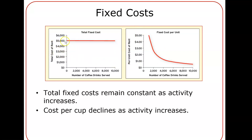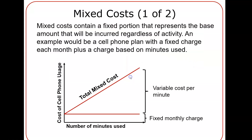Fixed costs are the exact opposite — they remain the same in total and they change per unit. The cost of rent remains $5,000 no matter how many drinks you serve within a relevant range. The per-unit cost of rent goes down the more drinks you serve, because you're spreading the cost over a bigger number of drinks. Mixed costs contain a portion of fixed and variable costs — the fixed portion remains the same no matter what, and variable costs increase per unit.